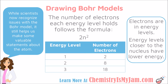In the last video, we learned that the Bohr model of the atom was sometimes called the planetary model because it had electrons going around the nucleus very much like planets go around the sun. We now know that there are some issues with that model of the atom — it's not totally accurate in terms of what's actually going on inside the atom. However, it still helps us make some valuable statements about the atom.